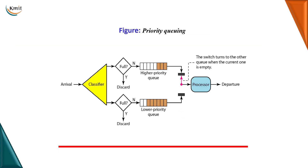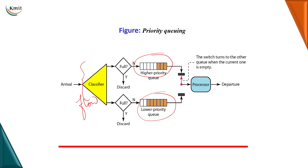Let us see the diagram to understand. We make use of a classifier here. When we have the arrival of packets — the arrival of the flow — we classify this flow into high priority packets and low priority packets. We have different queues for high class packets and low class packets. If the buffer is full we will discard the packets; otherwise we will store them in a queue. When all the higher priority queue packets are being processed, then the switch turns towards the lower priority queue and then the lower priority queue packets are being processed.